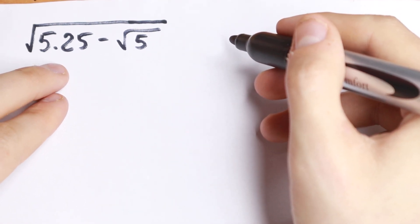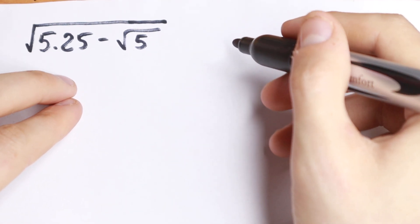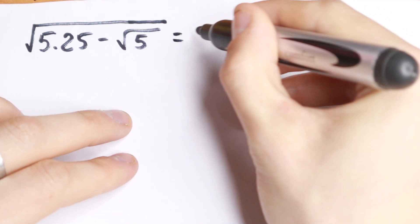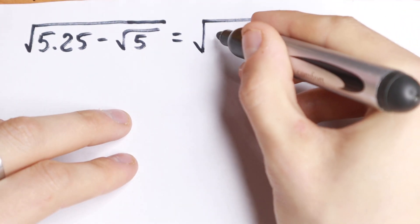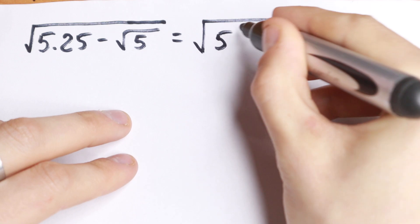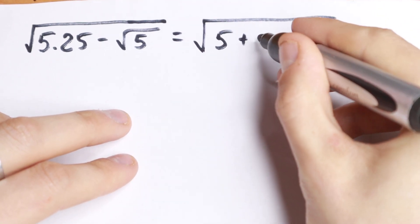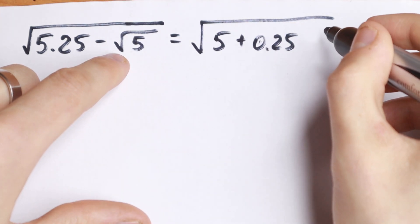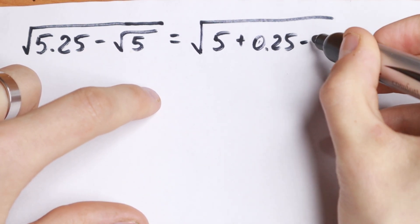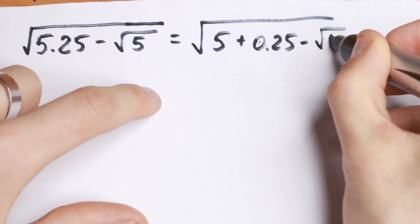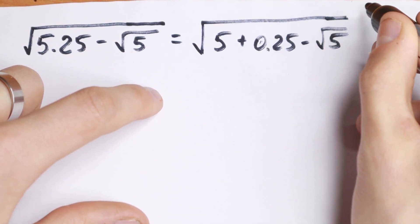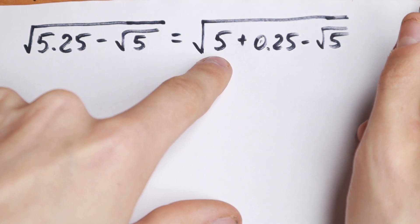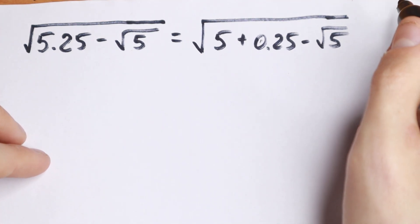First of all, let's write 5.25 as 5 plus 0.25. So we rewrite the expression with √(5 + 0.25) minus √5, writing 5.25 as the sum 5 plus 0.25.